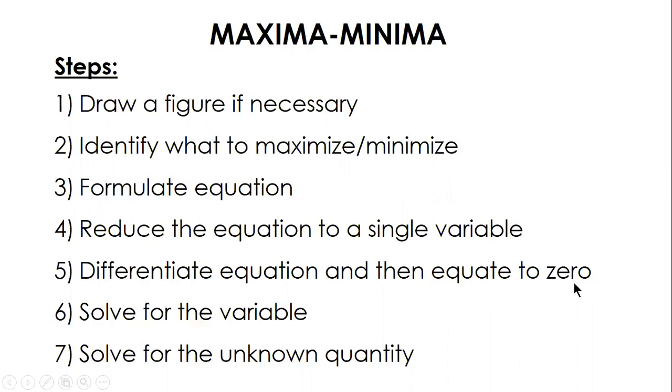Number five: differentiate the equation and then equate to zero. The reason behind equating to zero is because when you differentiate a function, the first derivative can be interpreted as a slope of a tangent line. So if the slope equals zero, it means it's a horizontal line. And if you have a curve with a horizontal tangent line, it means it's either the highest point or the lowest point—either maxima or minima.